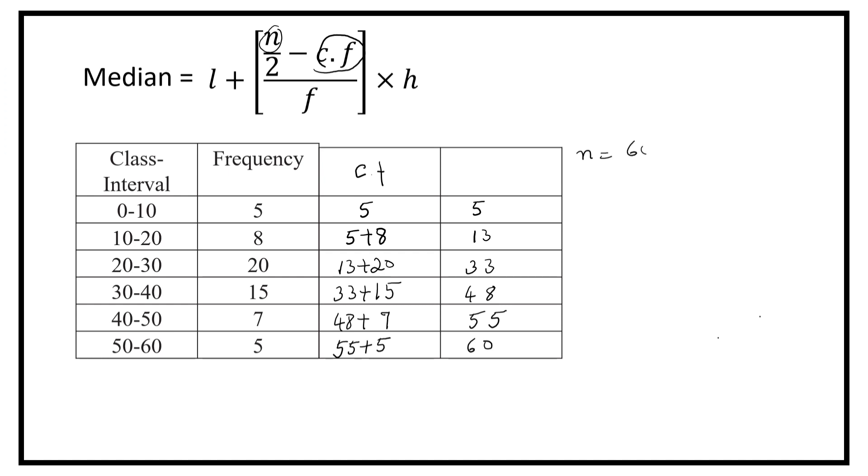So, n is equal to 60. n by 2 is equal to 30. The cumulative frequency just above 30 is 33. So, the class interval which contains 33 is 20 to 30.